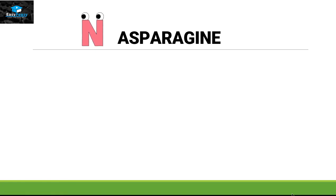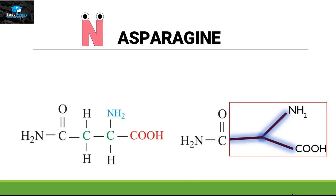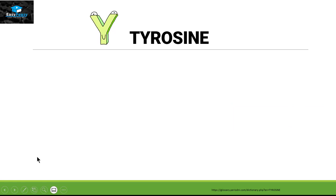Next is asparagine — the symbol is N. We take this fork structure and attach the amide group to it. This carbon atom is making four bonds: two bonds with oxygen, one bond with nitrogen, and one bond with carbon. Nitrogen belongs to group 5 so it makes three bonds — that is why it has two H groups attached to it.